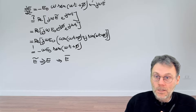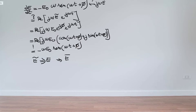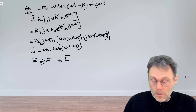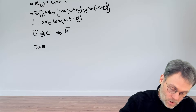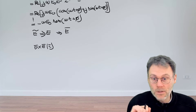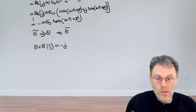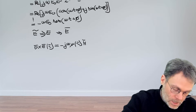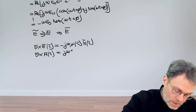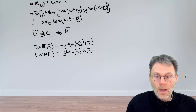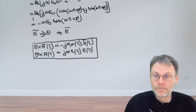We can now write Maxwell's equations in the phasor domain. It's a straightforward step: simply replace d/dt with multiplication by j*omega. The curl of E as a function of spatial coordinates equals minus j*omega*mu(r)*H. Similarly, the curl of H equals j*omega*epsilon(r)*E. These are the famous curl equations of Maxwell in the phasor — or frequency — domain.